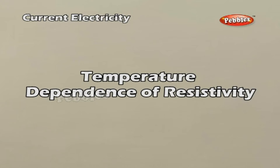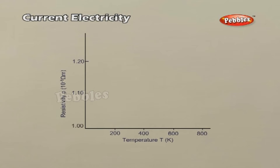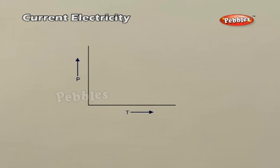Temperature Dependence of Resistivity: The resistivity of a material is found to be dependent on the temperature. The resistivity of a conductor is approximately given by the formula where ρT is the resistivity at temperature T, ρ0 is the resistivity at reference temperature T0, and α is called the temperature coefficient of resistivity. A graph of ρT plotted against T would be a straight line, though at temperatures much lower than 0°C it deviates considerably.